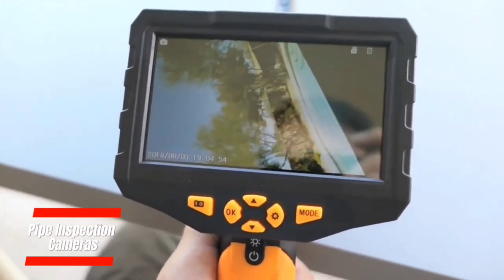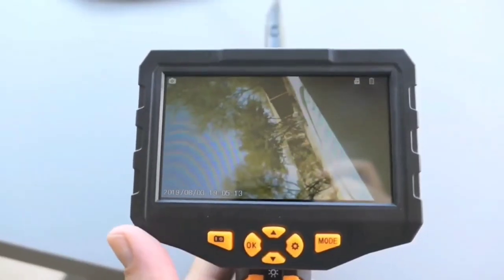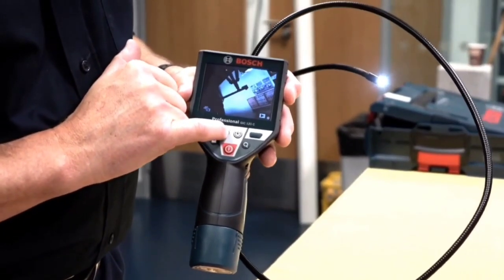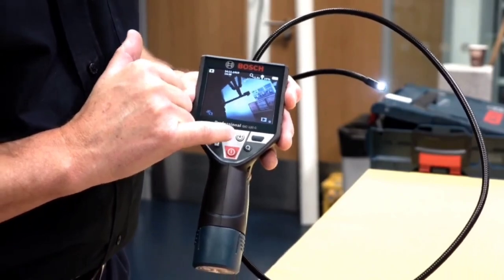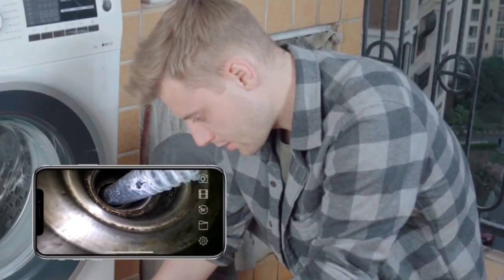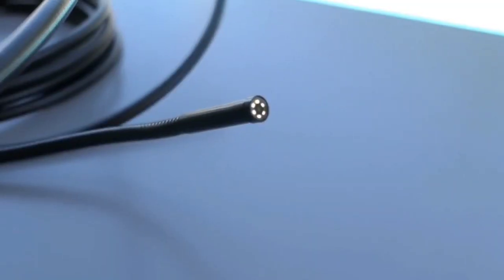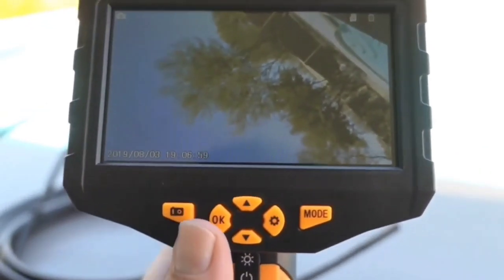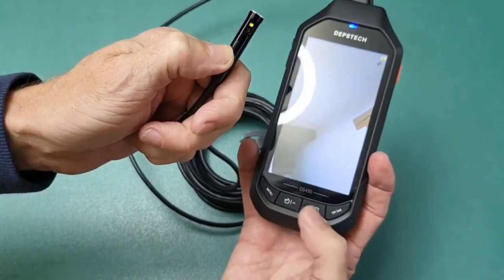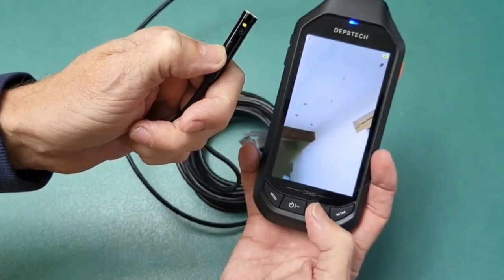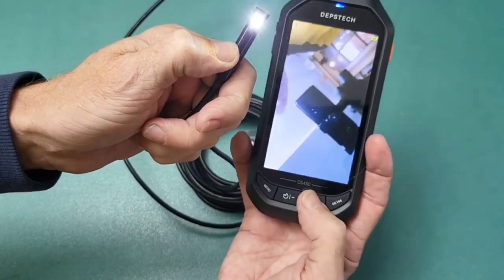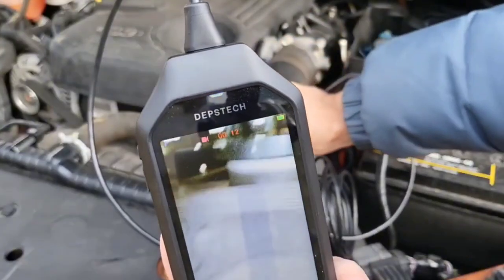Pipe inspection cameras have revolutionized the field of plumbing by offering a non-invasive and highly efficient method for inspecting pipes. These cameras are equipped with high-resolution lenses and are affixed to flexible cables, enabling plumbers to navigate through pipelines with ease. The key benefit lies in their ability to identify issues within the pipes without the need for disruptive excavation or dismantling. Plumbers can visually assess the condition of pipes, detecting blockages, leaks, and structural problems.